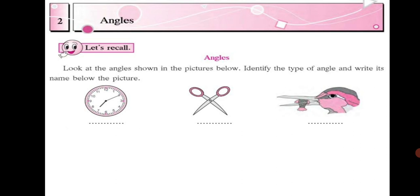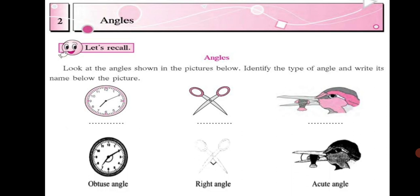In the first picture, we see that it is an obtuse angle. In the second picture, we see a right angle. The obtuse angle is formed like this. And here we have a right angle. In the third picture, we see an acute angle. So you remember the types of angles which you have already learnt.